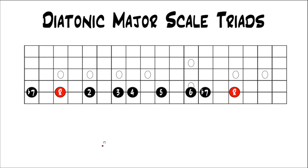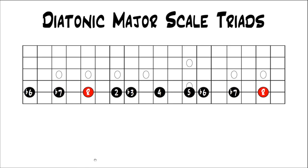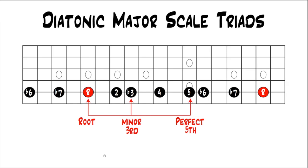Rearranging the intervals again: now we're on the fifth note of the major scale, which becomes our new root. We get root, 2, 3, 4, 5, 6, flat seven this time. Building a triad off that note gives us again a major triad. Then starting on the sixth note of the major scale, the intervals give us root, 2, flat 3, 4, 5, flat 6, flat 7. Building a triad off of that gives us a minor triad — root, minor third, perfect fifth.